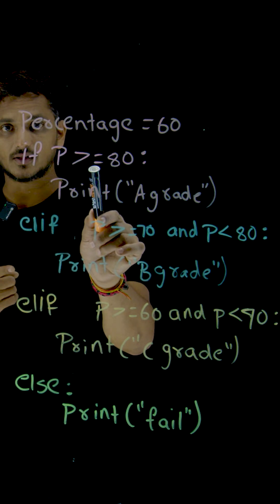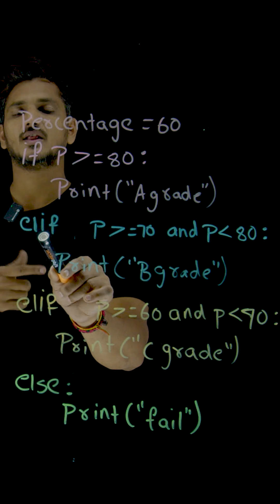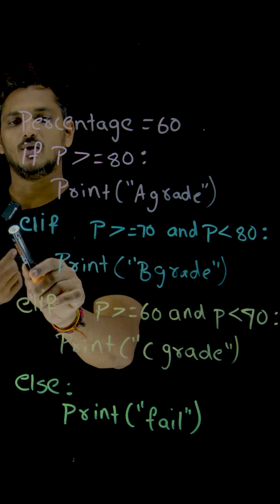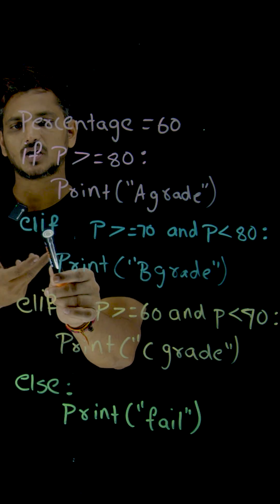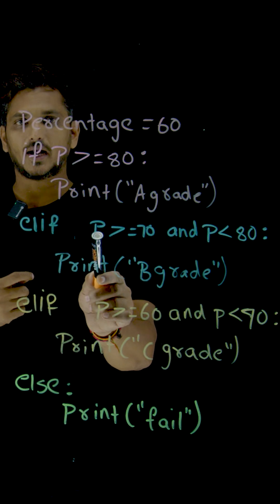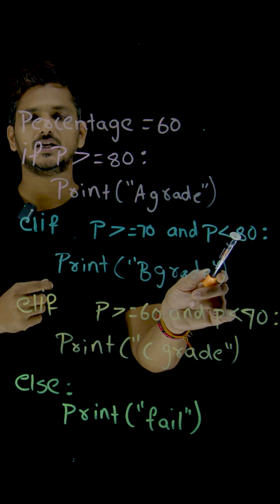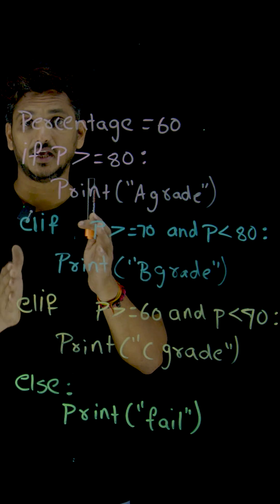If this condition is false, now check elif condition. Means else if - in remaining programming languages we call it as else if. Here, shortcut they have given elif. Else if. Check the condition: P greater than or equal to 70 and P less than 80. If your percentage is between 70 and 80.